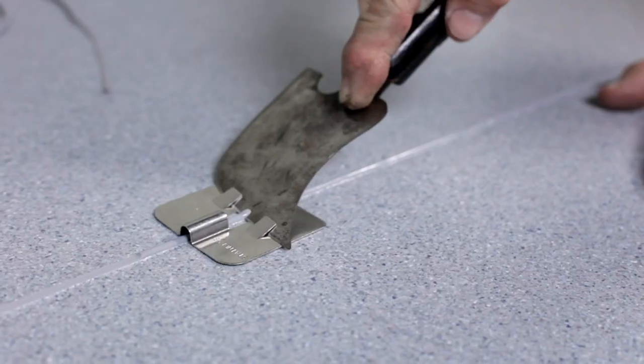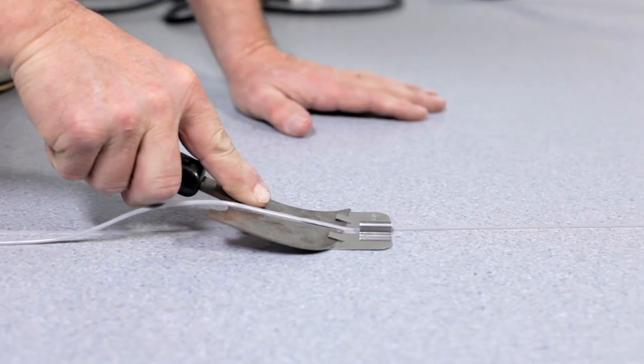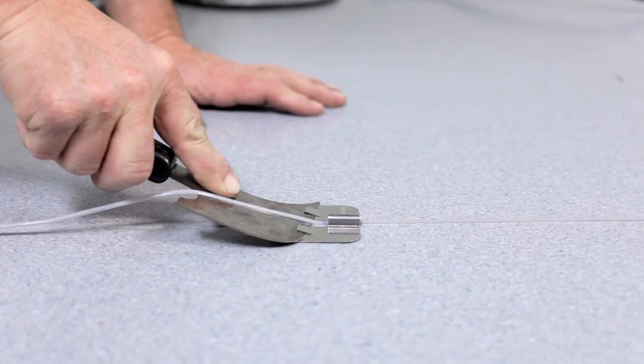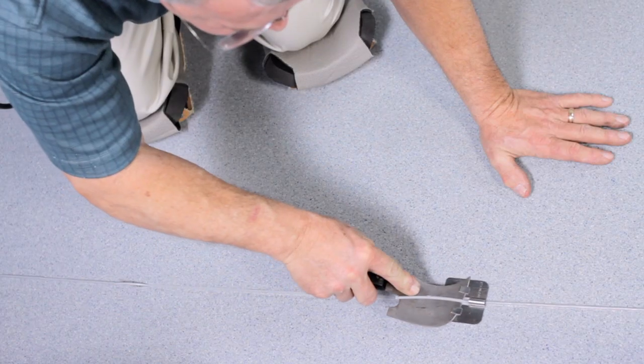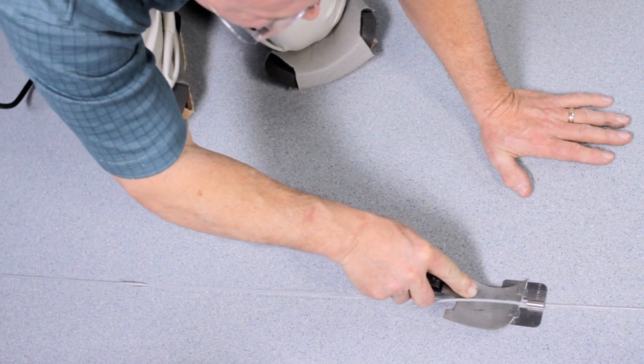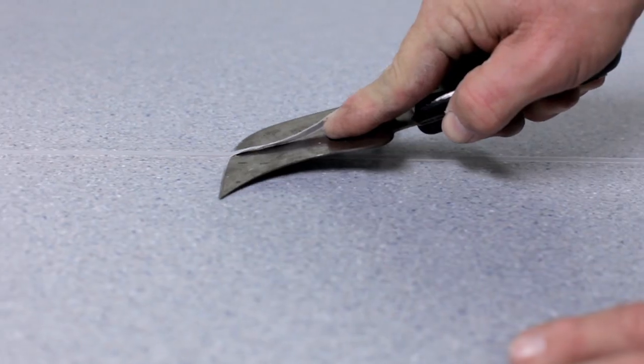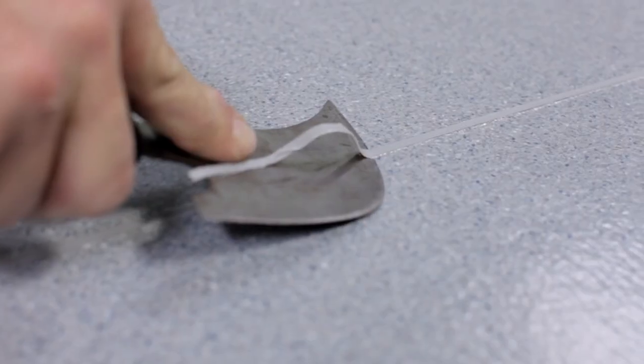The weld rod should be trimmed in 2 passes when using a spatula knife. While the rod is still warm, skive the first pass using the spatula knife with the trim plate. Once the rod is cooled to room temperature, the rod can be trimmed flush to the edge of the sheet vinyl.